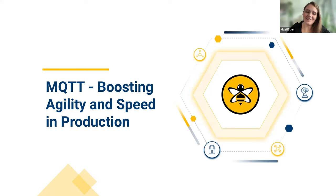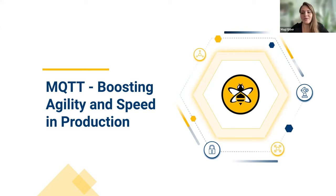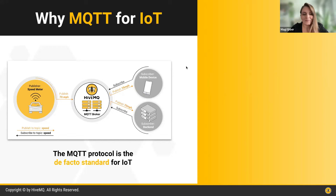Let's look at how MQTT can help you boost agility and speed in production. MQTT is the de facto standard protocol for IoT. It has many advantages: first, it is open and vendor-neutral, enabling flexible integration of components, and there are many client libraries available. Second, it has a decoupled pub-sub architecture, which enables you to add new devices on the fly without affecting existing structure, and dynamically configure topics and subscriptions.